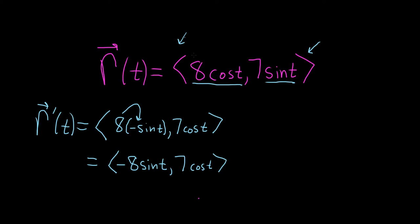So pretty easy. Again, the derivative of 8 cosine t, that's just going to be negative 8 sine t. That's what we have here. And the derivative of 7 sine t is 7 cosine t. And this would be the answer. This would be the derivative of the vector-valued function.